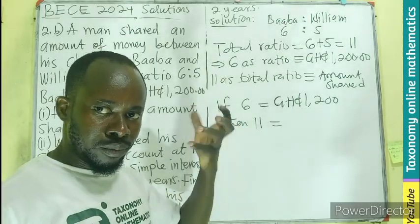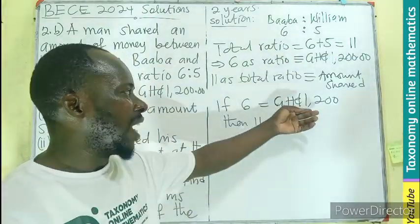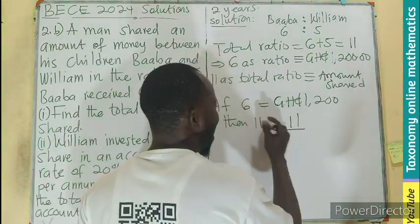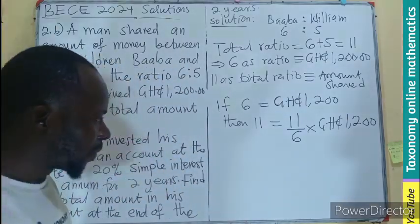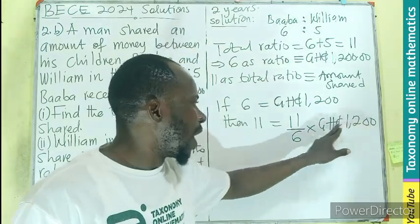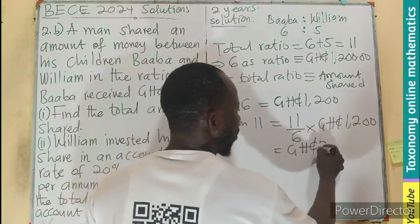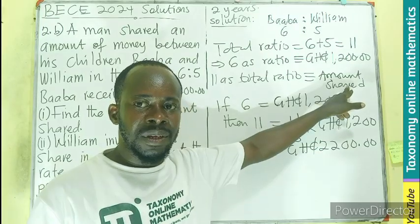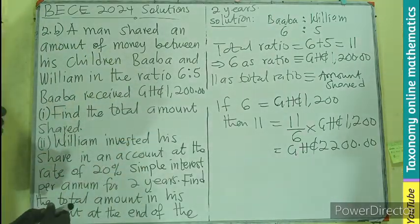If 6 parts is giving you 1,200, then the 11 parts — which include the 5 parts — should be more in value. Since more, the less among the ratios will divide. So: 11 divided by 6, times 1,200. Since 6 is a factor of 1,200, 6 goes into 1,200 to give 200. Then 200 times 11 gives us 2,200. So the total amount shared is 2,200.